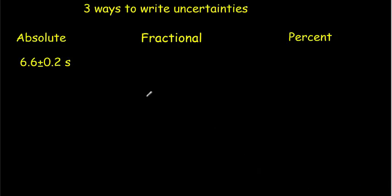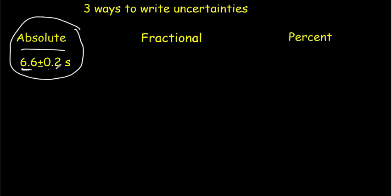Now, up to this time, you've been writing your measurements and uncertainties in what's called absolute form, which means that you've got a value and an uncertainty that both have the same units. So 6.6 seconds plus or minus 0.2 seconds — we only have to write the seconds down once. But often what we'd like to do is write our uncertainties as a fraction, so in fractional form this uncertainty would be 6.6 plus or minus 0.2 out of 6.6. So you're just looking at how big your uncertainty is compared to your value.